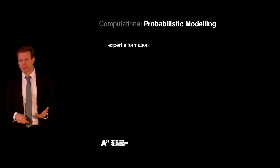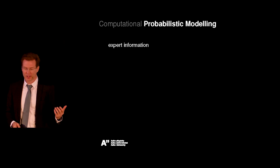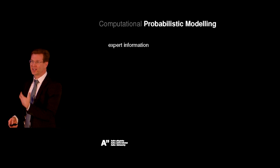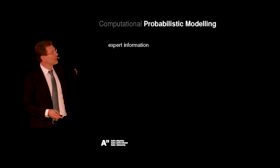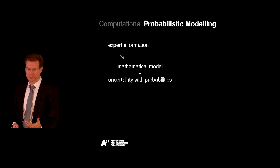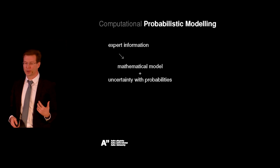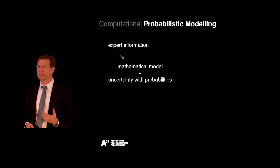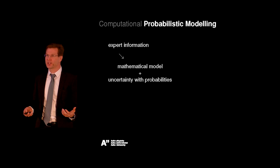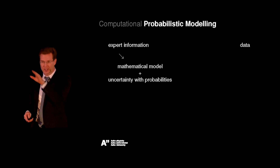Now, the probabilistic part. We start with expert information — like in the previous example, where we had the gut, blood, organ, kidney, and different diffusion rates — and transform that into a mathematical model. There are uncertainties: we don't know beforehand for a new drug what the different diffusion rates are, but we can describe them with probability distributions. We can also use probability distributions for functions. We don't know what the maturation function looks like, but we know something — like that it's monotonic.